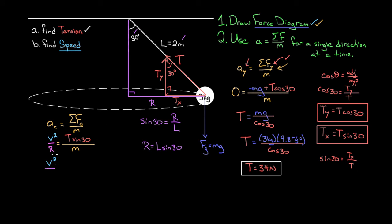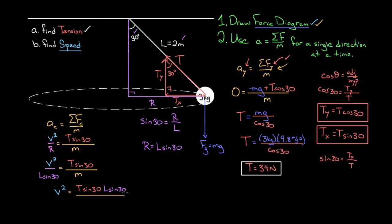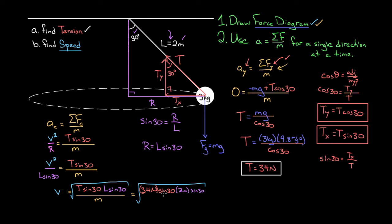Plugging back in: v² / (L·sin30°) = T·sin30° / m. Multiplying both sides by L·sin30°, we get v² = T·sin30° × L·sin30° / m. Taking the square root of both sides, V = √(T·sin30° × L·sin30° / m). Plugging in numbers: V = √(34 × sin30° × 2 × sin30° / 3), which gives a speed of about 2.38, so approximately 2.4 meters per second.